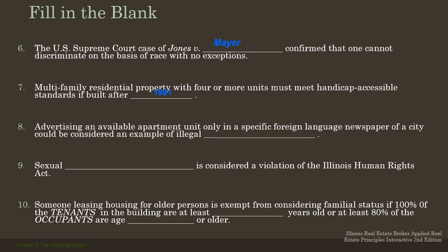Advertising an available apartment unit only in specific foreign-language newspapers of a city could be considered an example of illegal steering or channeling. What they're saying is: if you're going to do advertising in media, try to do it in a variety of media — don't just do it in one language. If you have property in a Hispanic neighborhood, you might want to advertise it also in Eastern European, Ukrainian, or Greek neighborhood papers. So use a variety of papers in other foreign languages in addition to, say, Spanish — to show the property has access to all people and you're inviting all individuals, not just those who are Hispanic.